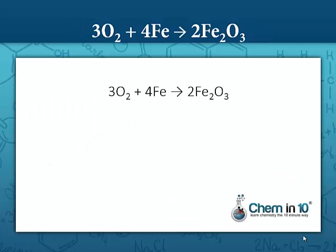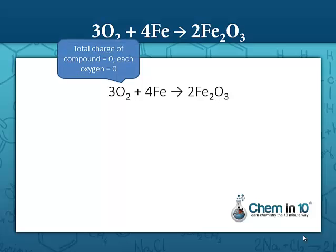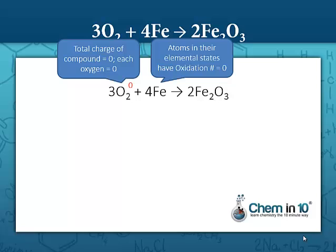So let's start with the first reaction in our sample problem: three molecules of oxygen react with four atoms of iron to make an iron oxide. Starting with O2 — O2 is a neutral compound, so all the elements in it must add up to an oxidation number of zero. Since we only have oxygen, and two oxygens make a total charge of zero, each oxygen has an oxidation number of zero. Next, iron in its elemental state is automatically an oxidation number of zero.